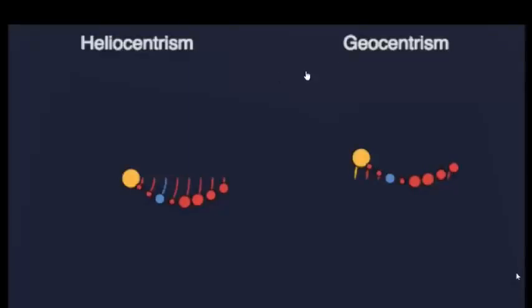The concept of heliocentrism and geocentrism. Heliocentrism is when we consider the sun as the center of the solar system, and geocentrism is when we consider Earth as the center of the solar system. So the motion as observed from these points of reference appears something like this.